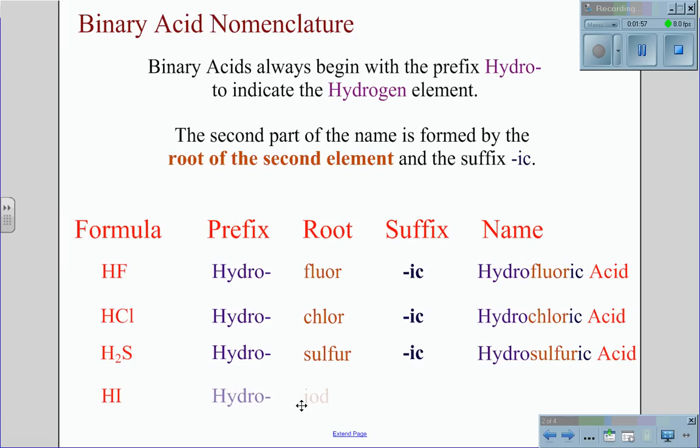And for the formula HI, we use the prefix hydro. The root becomes iod from iodine, the suffix is ic, giving us the name hydroiodic acid.